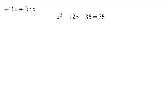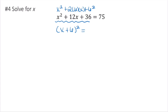This problem ties into completing the square. The left side is a perfect square trinomial — x squared plus 2 times 6 times x plus 6 squared — so it can be written as x plus 6 squared. This turns it into a perfect square equation, which is quicker to solve. You could also convert to standard form and use the quadratic formula and get the same answer.